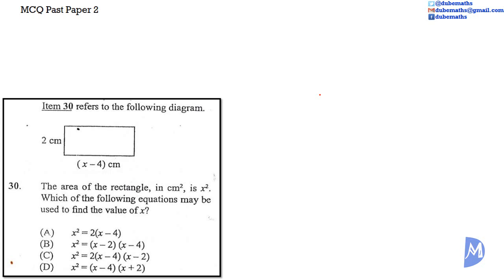Number 30: The area of the rectangle in centimeters squared is x squared. Which of the following equations may be used to find the value of x? The formula for the area of a rectangle is equal to the length L multiplied by the width W.